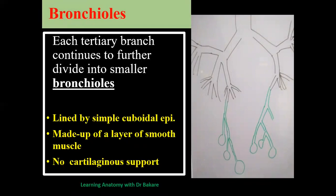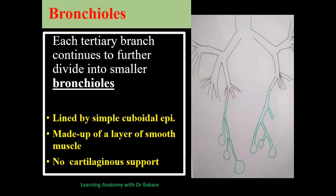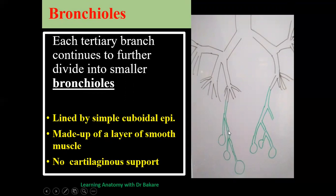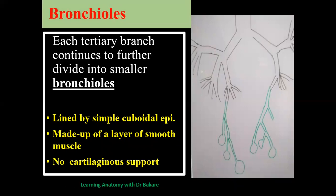The next division is the bronchiolar division network, where each tertiary bronchus divides into smaller bronchioles. Importantly, bronchioles do not have cartilaginous support — the cartilage seen from the trachea, which became irregularly shaped, now disappears entirely. Bronchioles are made up of smooth muscle. The epithelium lining also transforms: from the ciliated pseudostratified columnar epithelium of the trachea, it becomes simple cuboidal epithelium at the bronchiolar stage.